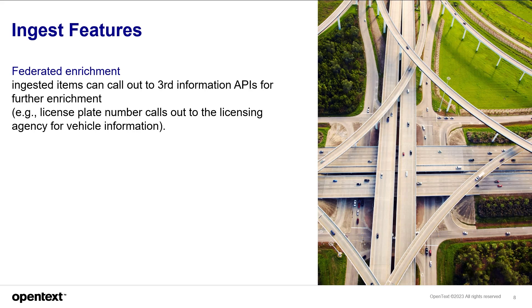Ingest features have been added: federated enrichment. This allows ingested items to be further processed through ancillary systems to provide even more detailed data. For example, a license plate being recognized can then be looked up at an authority or agency for vehicle information to add to the record.